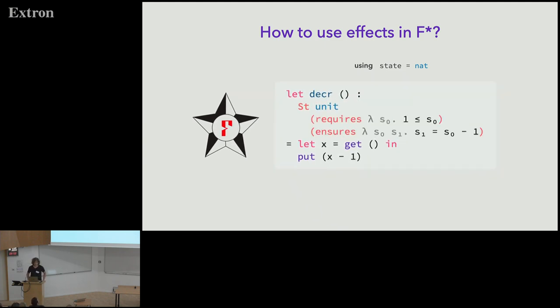But you also have more information. You also have some specifications attached to it so you have a pre and post condition. So here, for instance, we could say that we require the initial state s_0 to be greater than one. That's because we want the state to still be a nat so we want to decrease it by one. And then the post condition is going to say that the final state s_1 is just the initial state minus one. And more generally you can also conclude about the result which I call r here but since it's a unit we can just ignore it.